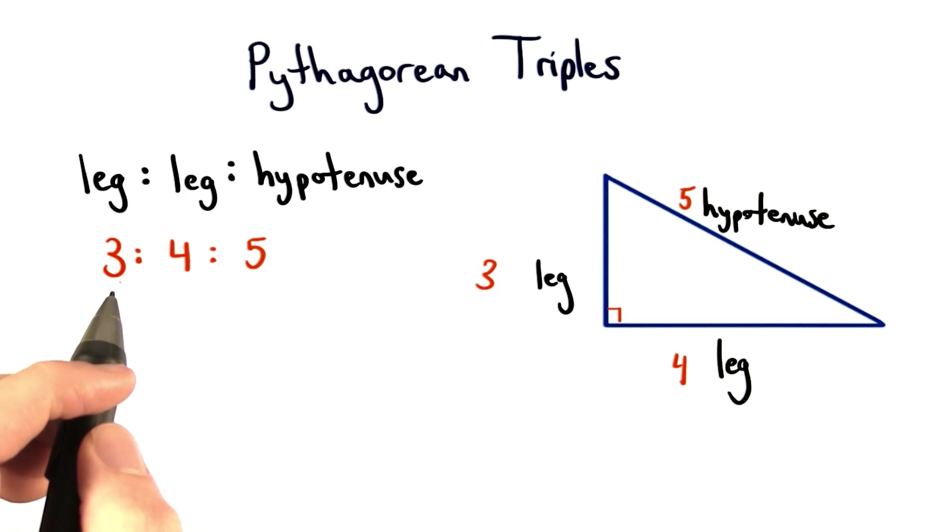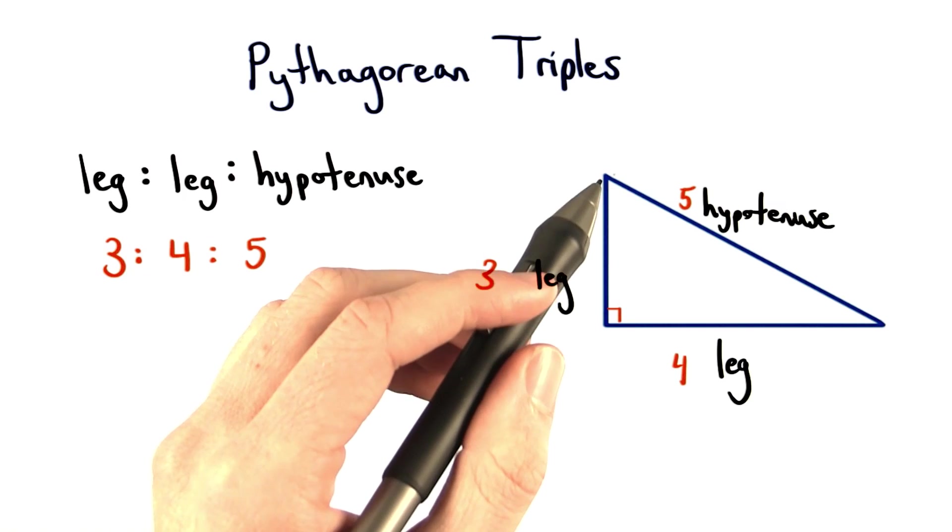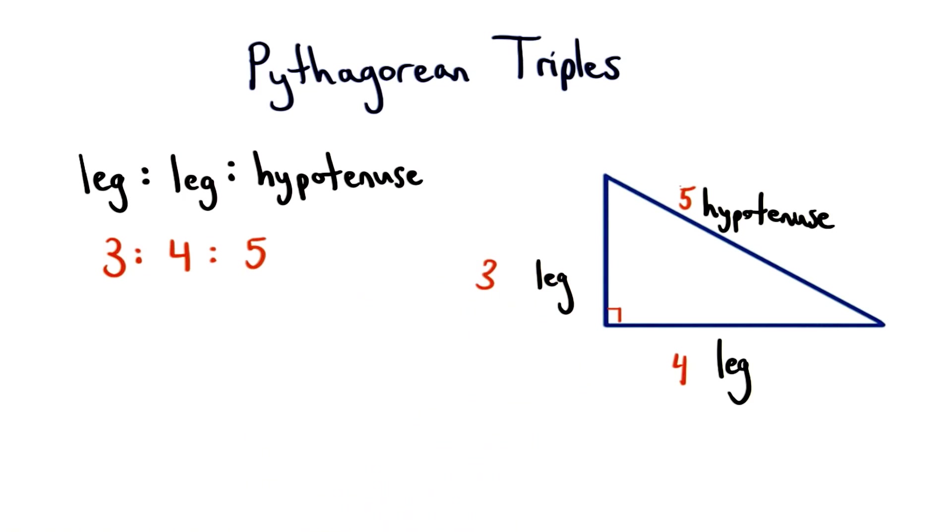For the last problem, we could actually use the special ratio 3 to 4 to 5 to find a missing side length. If the side lengths are in the ratio of 3 to 4 to 5, then any multiple of that would also be a right triangle.